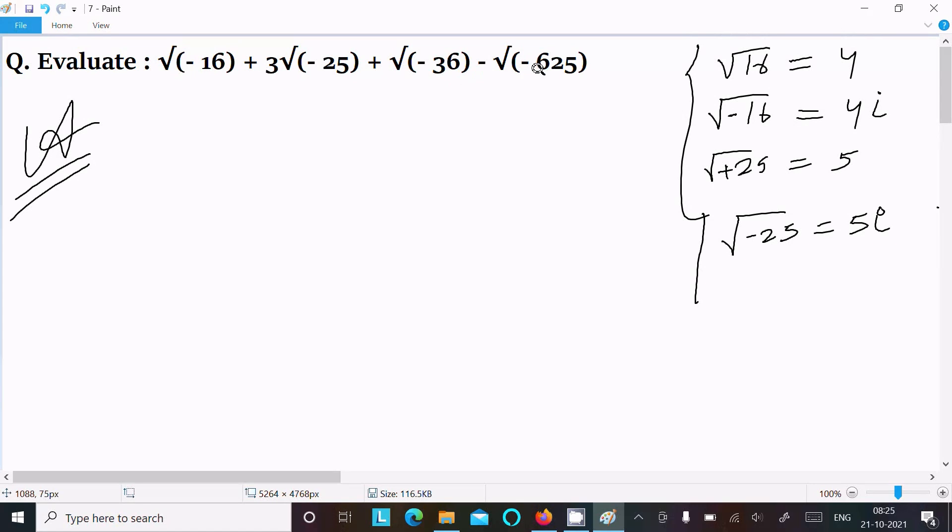And √(-625) returns 25i. So writing this out, the value is now 4i, plus 3 into 5i (that's the imaginary number), and the next is √(-36) which returns 6i.